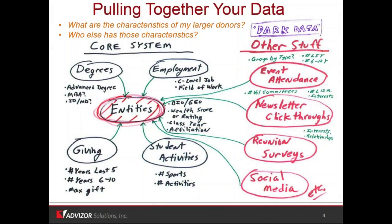In our application, once you figure out what these metrics should be and how to weight them, we can create composite scores. Every day we'll load the data from Agilon. If there are newsletter click-throughs in a spreadsheet or text file, or a reunion survey somewhere, we can grab that at the same time and redo all the binning, all the synthesis, and then update scores. So if somebody came to a reunion over the weekend, clicked on the newsletter 16 times, went to some event and gave a gift, they're going to jump way up in attachment or engagement when you next look at the score.